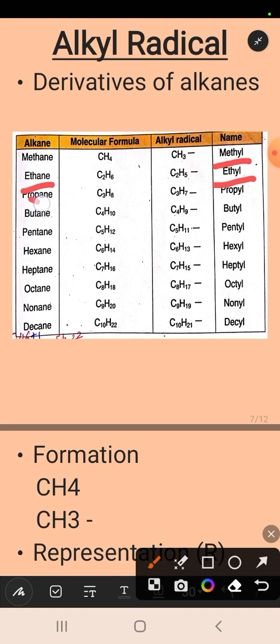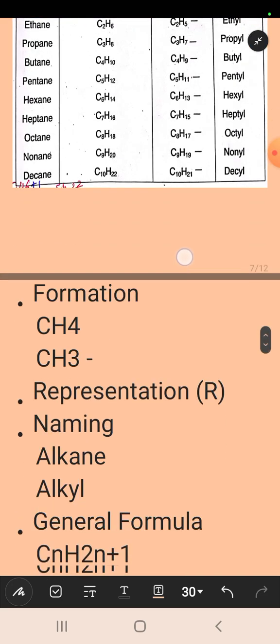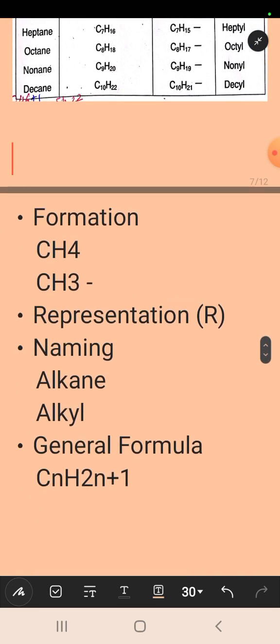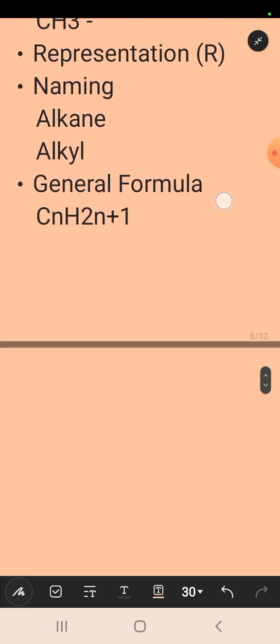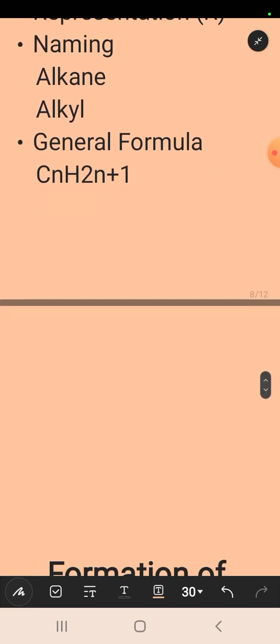Next is the general formula. All alkyl radicals have the same general formula: CnH2n+1. I hope this topic is clear to you.